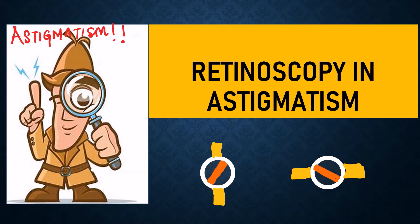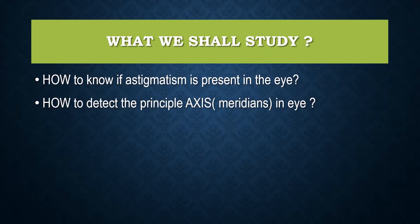Here in the second lecture we shall be discussing retinoscopy, particularly in patients who have astigmatism. We shall study how to know if astigmatism is actually present in a patient's eye just by doing retinoscopy, and how to detect the principal axis or the principal meridians in the eye.